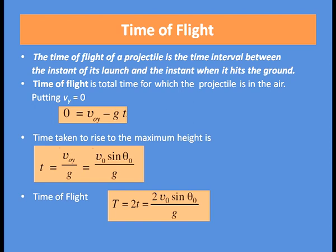This is the time required to rise to the maximum height, but the total time of flight equals the time of ascent plus time of descent, which equals 2t. The total time of flight T = 2·V0 sin θ₀ / g.